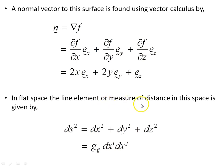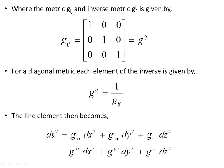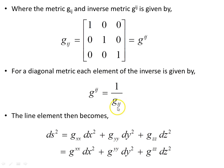In flat space the line element, or measure of distance, is given by ds² = dx² + dy² + dz² — Pythagoras in three dimensions. We can also write it in terms of the metric g_ij times each of the differentials dx^i dx^j, summing i and j over x, y and z. The metric g_ij is the identity matrix, so it is its own inverse — the inverse metric with both indices raised is still the identity matrix. For a general diagonal metric, each element of the inverse is just the reciprocal of the element along the diagonal.